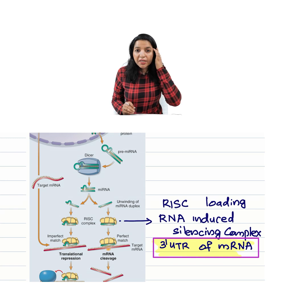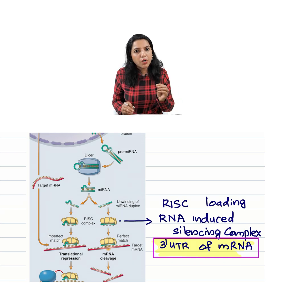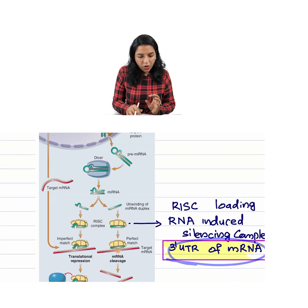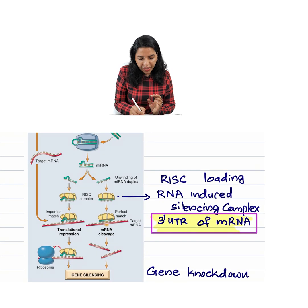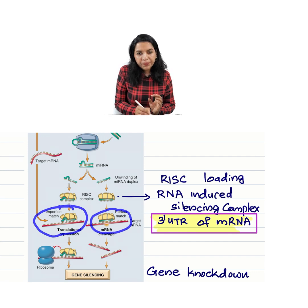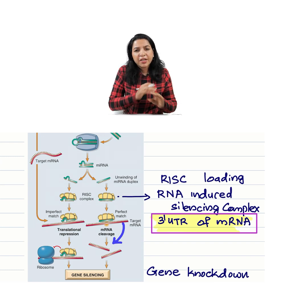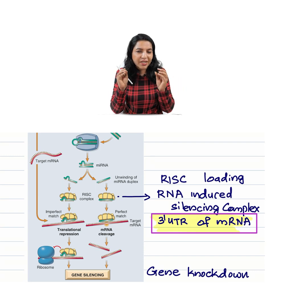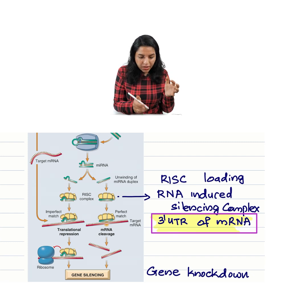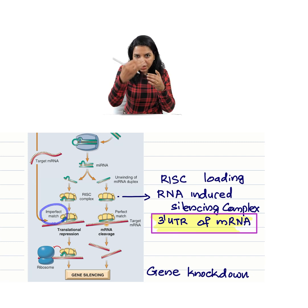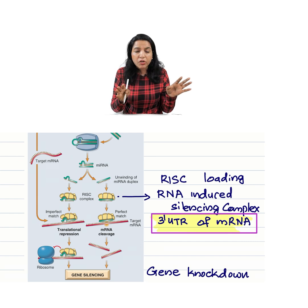What is the function of these microRNAs? Even though they are small, they can bind with the 3' untranslated region of an mRNA, as seen in this picture. The pairing can be perfect or imperfect. If it is a perfect pairing, RISC will cleave the mRNA — just like a spider eating a fly.